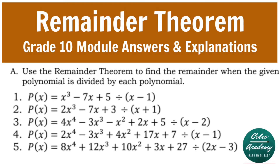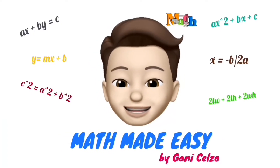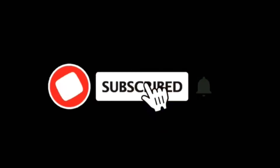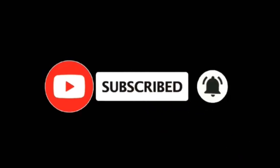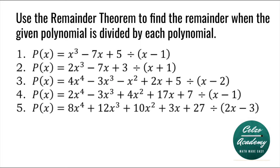Today we're going to solve problems involving the remainder theorem, sent to us by grade 10 students in the Philippines. Suppose P is a polynomial of degree at least one and C is a real number. When P of X is divided by X minus C, the remainder is P of C. Use the remainder theorem to find the remainder when the given polynomial is divided by each polynomial.